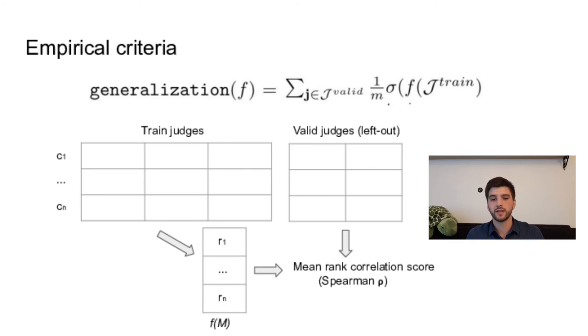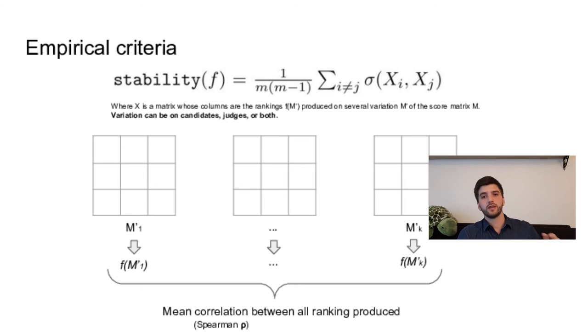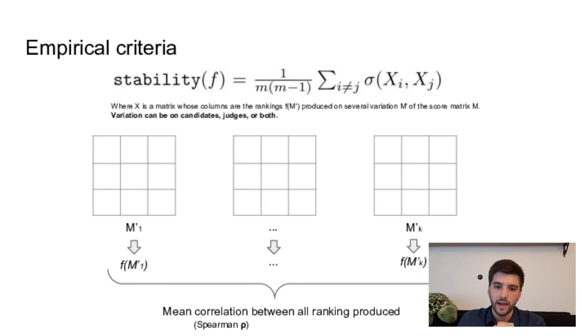Another empirical criteria is the stability. So here you take different versions of your score matrix. And for each of them, you compute the rankings using your ranking function. And you compare all of those rankings to see if they are well correlated using typically the correlation of Spearman. So this does not give information about the quality of the rankings themselves, but how consistent is the method in the ranking produced. So when you do variation on the score matrix, for example, in the candidate set or in the judges set, will your method produce the same ranking? So that is evaluated by the stability.